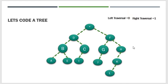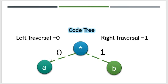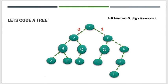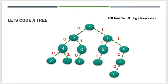Pag okay na yung tree at naayos na, ang susunod na gagawin ay maglalagay na kayo ng traversal. Maglalagay na tayo ng left traversal at right traversal. Ang rule: ang nasa left traversal ay may value na 0, ang nasa right traversal ay may value na 1. Kaya sa tree natin, sa may left nilagyan ko ng 0, sa may right nilagyan ko ng 1 — gagawin ninyo yun sa lahat ng edge ng tree ninyo. Kaya nabuo natin: 0, 1, 0, 1, 0, 1, 0, 1, 0, 0, 0 — lahat ng nasa left may value na 0, lahat ng nasa right ay 1.